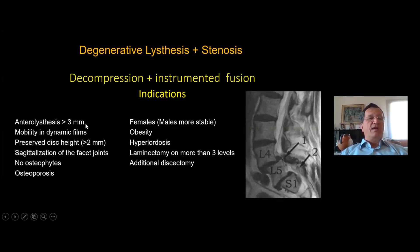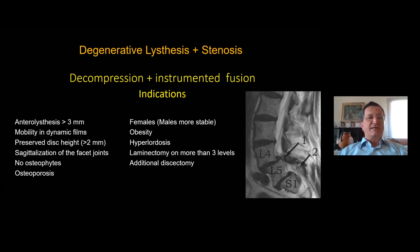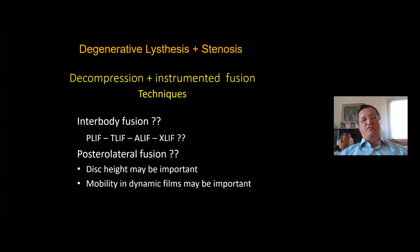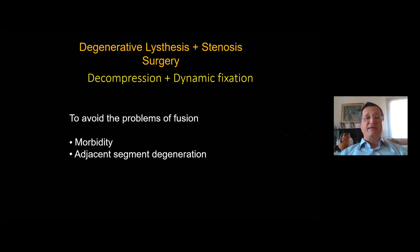However, if on functional films there is significant subluxation mobility, if the disc height is preserved, if the facet joints are sagittalized, if there are no osteophytes, and if there is osteoporosis, those patients may be candidates for instrumented fusion. There are different types of fusion techniques: interbody, posterior fusion, and dynamic fixation to prevent adjacent segment degeneration.